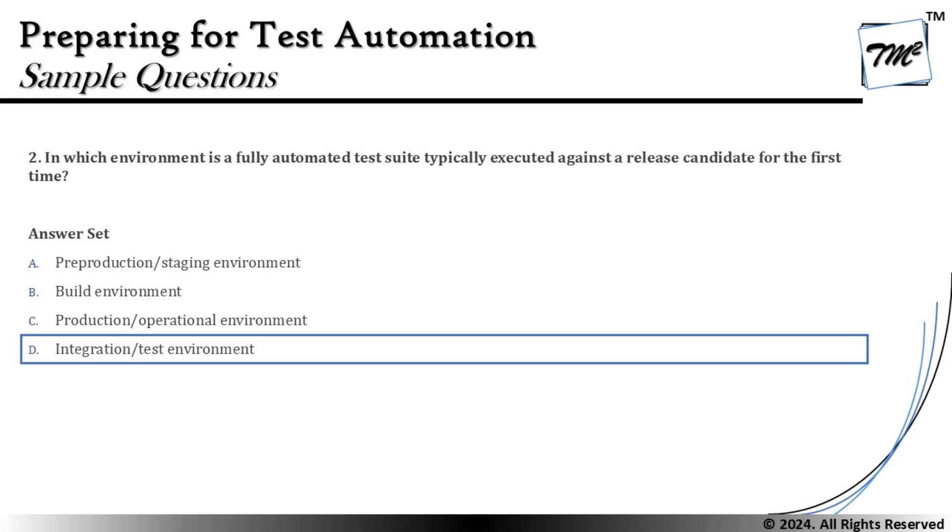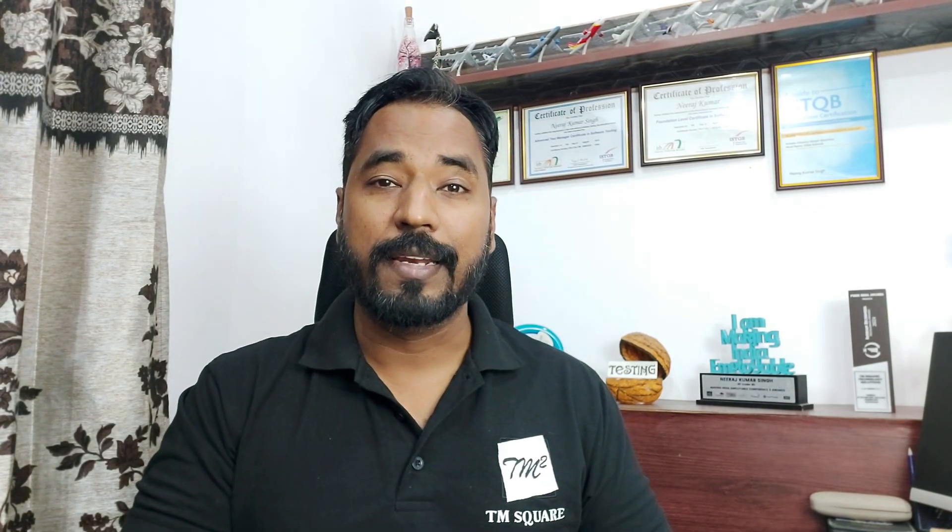That's how we consolidate everything we know. At the same time, we need to justify why the other environments are not relevant. You need to recall the characteristics of each environment and correlate: is the 'release' word the key here, or is the key point that it's a fully automated test being executed for the first time? Let's move on to question number three.